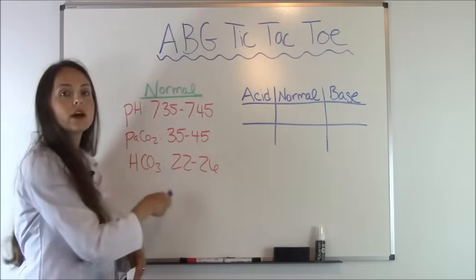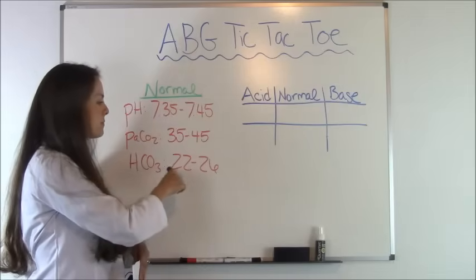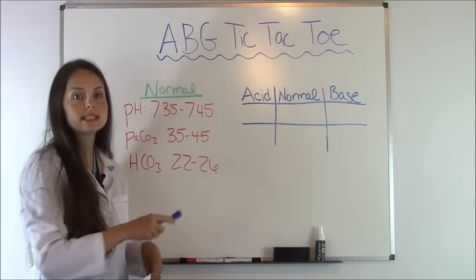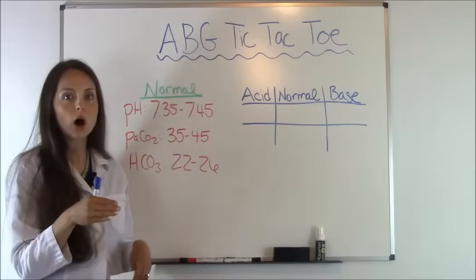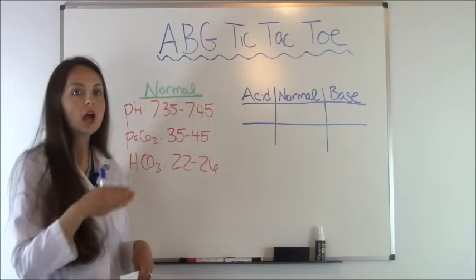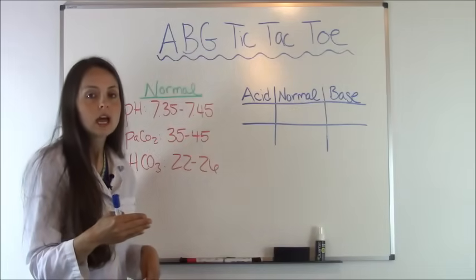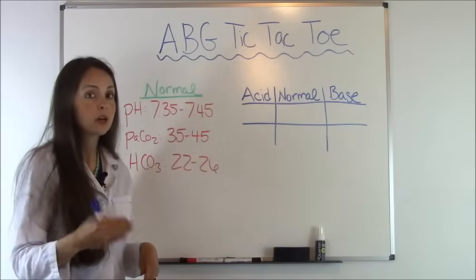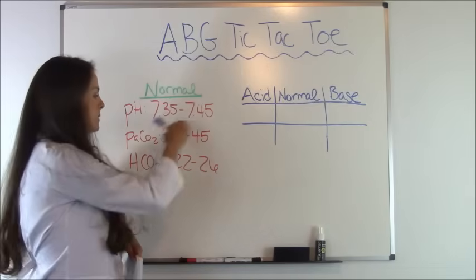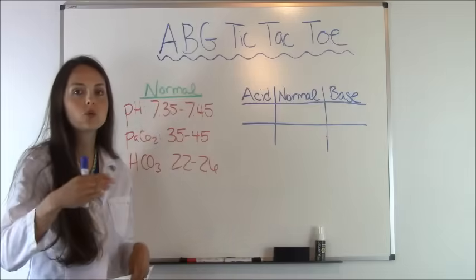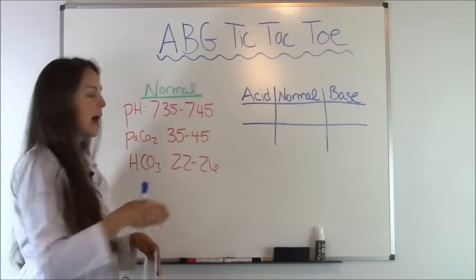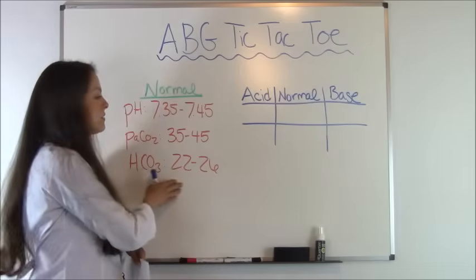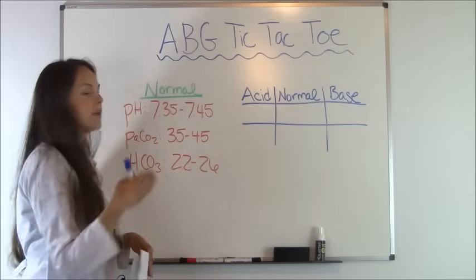I'm going to skip to HCO3 because it's the same. 22 to 26 is your normal range for that, and that represents metabolic. Anything over 26 would be basic, it would be alkalotic. And anything less than 22 would be an acid, so they would be having a metabolic problem and they would be acidotic.